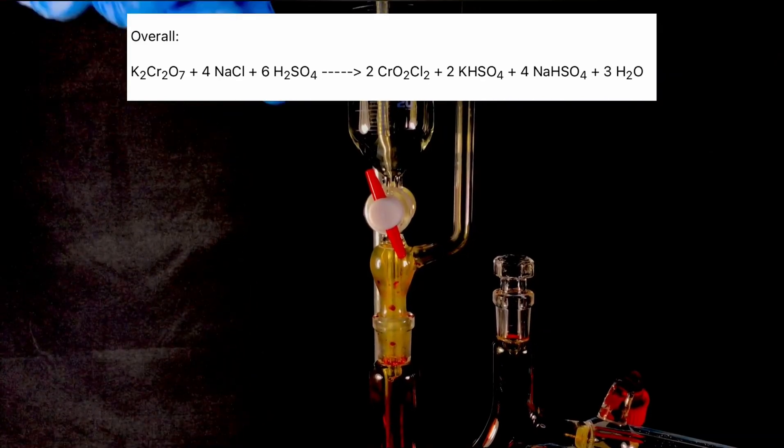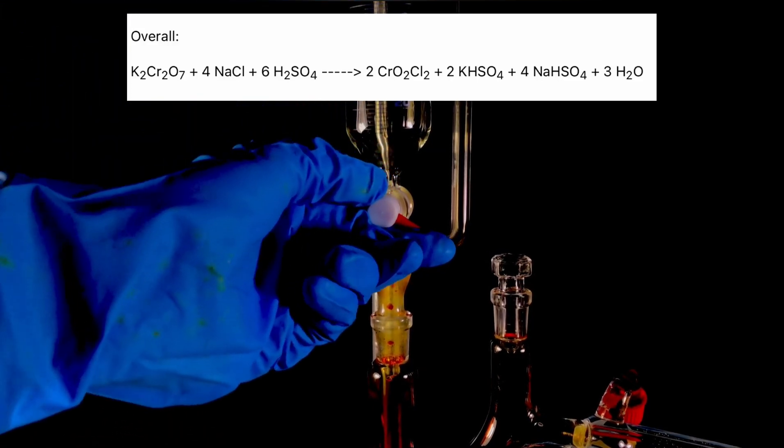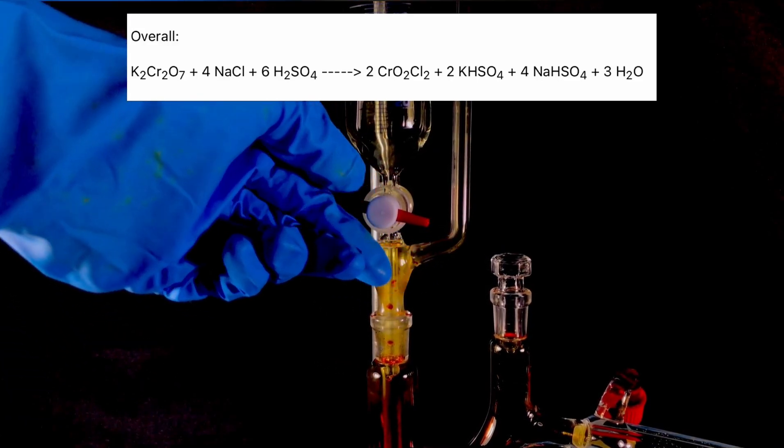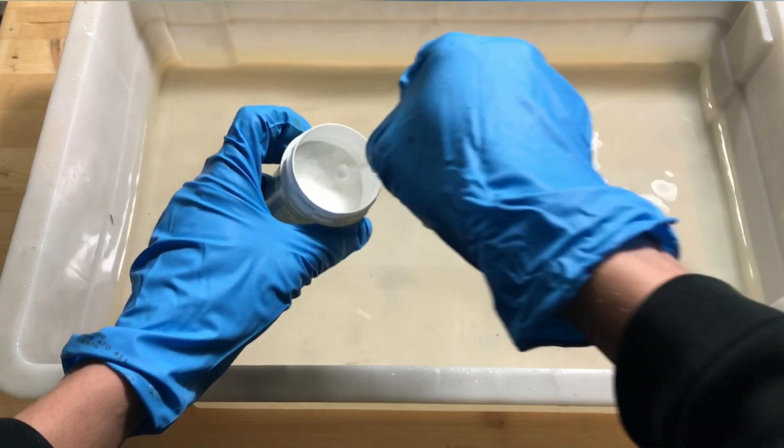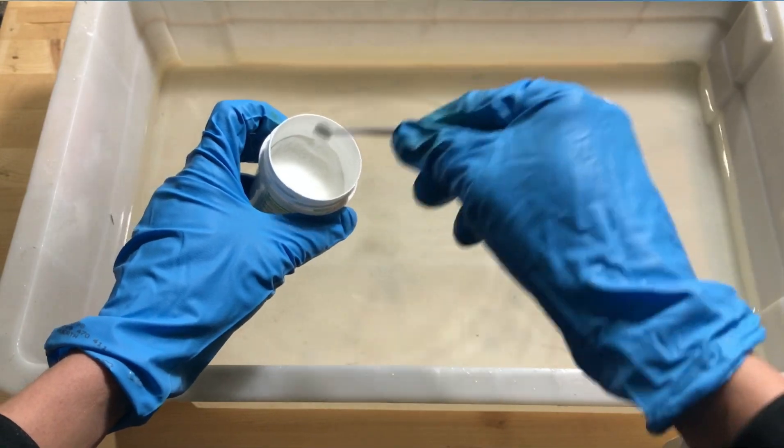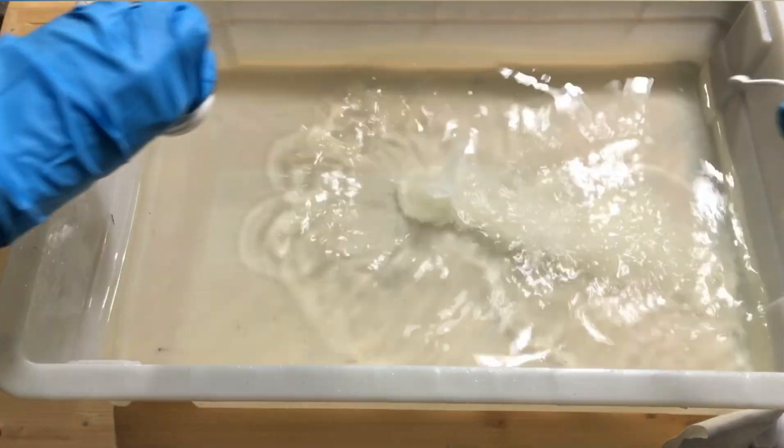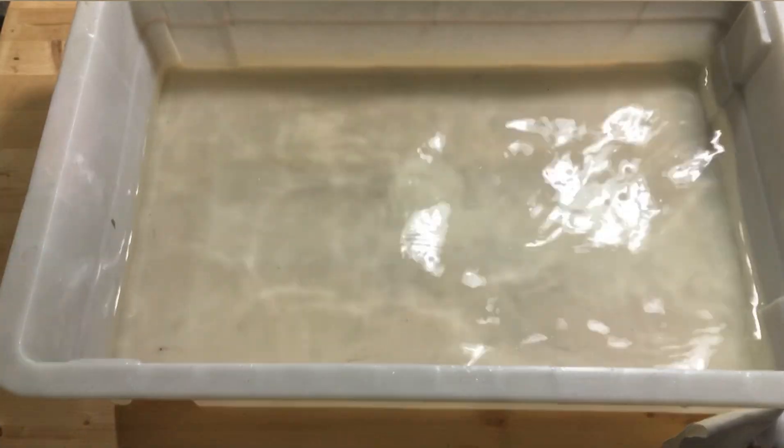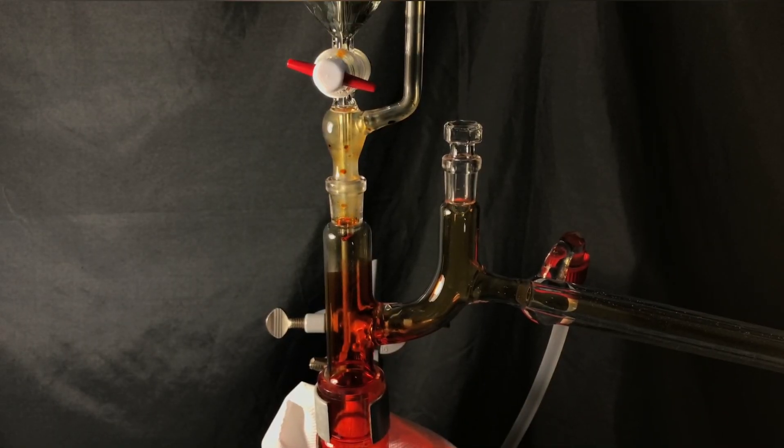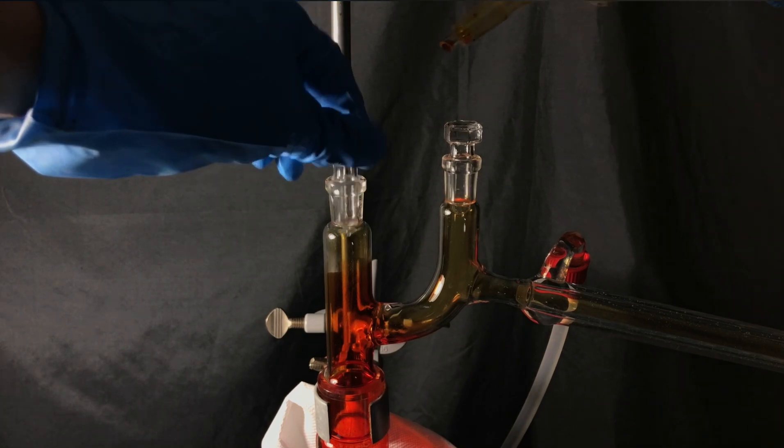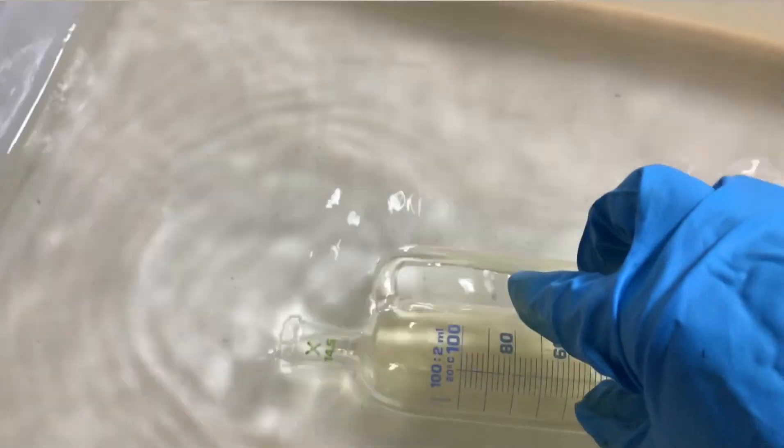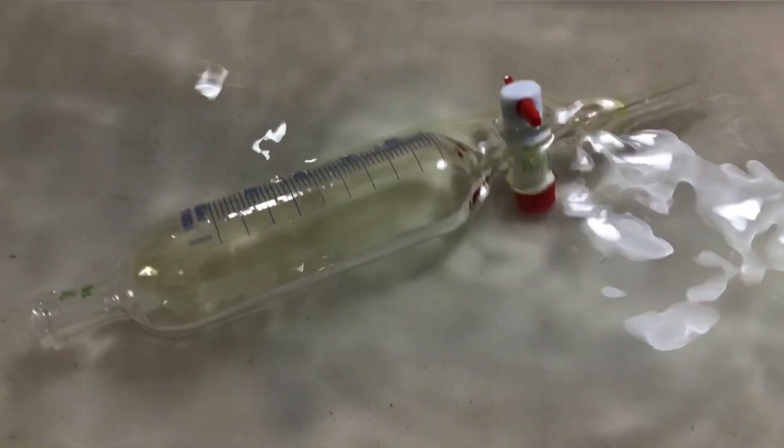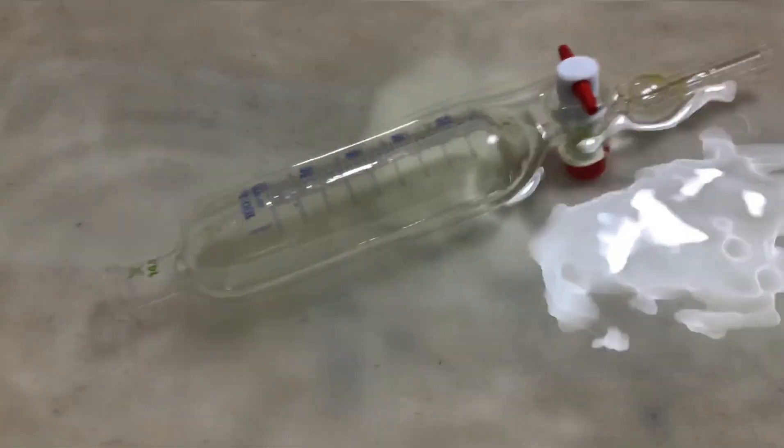All of the sulfuric acid has been added. The addition funnel was closed. Before continuing we set up a reducing bath to destroy any hexavalent chromium. As a reducing agent a small amount of ascorbic acid was added. Sodium sulfite could also be used. The addition funnel was swapped out for a well-greased stopper. For cleanup the addition funnel was put directly into the reducing bath. I let it sit there for at least 10 minutes before continuing with the cleanup.